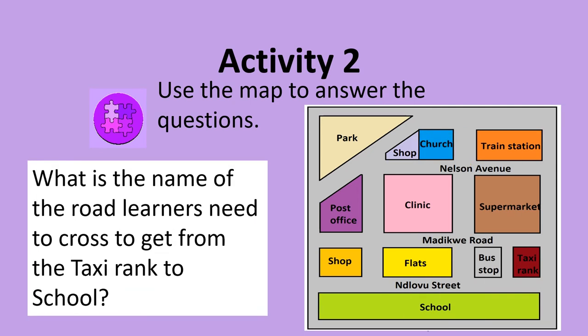What is the name of the road learners need to cross to get from the taxi rank to the school? If you said Dlovo Street, then you are correct. Dlovo Street is between the taxi rank and the school.